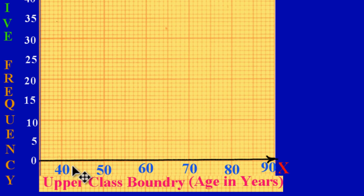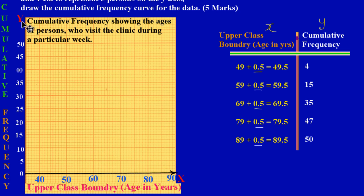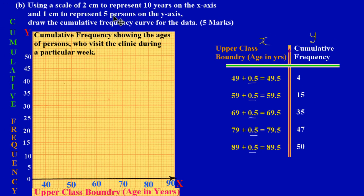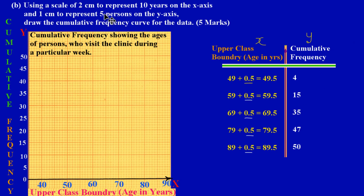We need to label our axes. The horizontal axis is called the x-axis and the vertical axis is called the y-axis. For the y-axis, the question asks us to use one centimeter to represent five persons. From zero at the origin going up, that's one centimeter, and I'm counting by five - so for each centimeter I increase, I'm increasing by five.